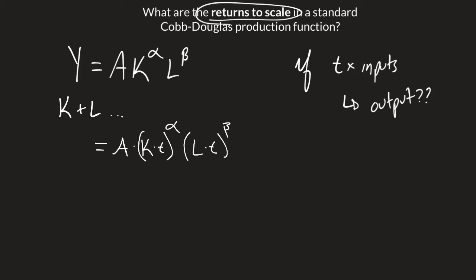And that means our output is going to equal A times—we're going to take this exponent and feed it through. So we have K to the alpha, t to the alpha, L to the beta, t to the beta.